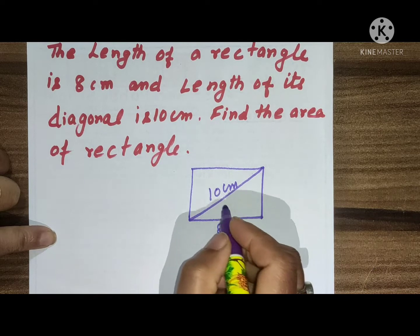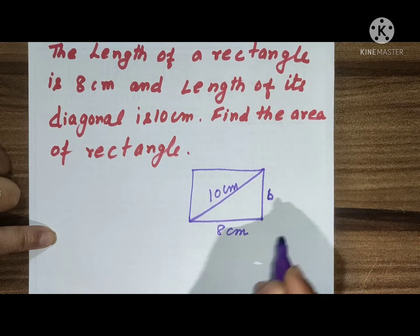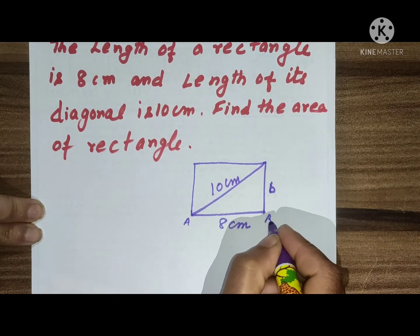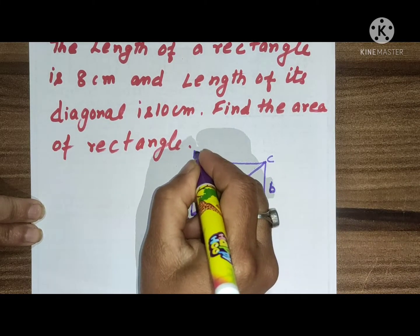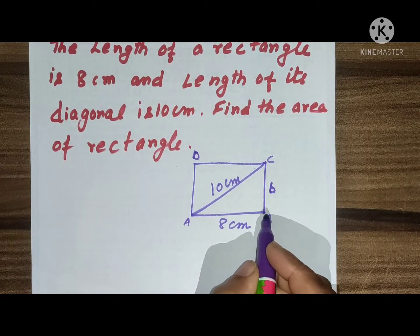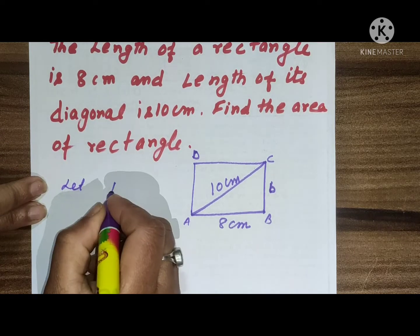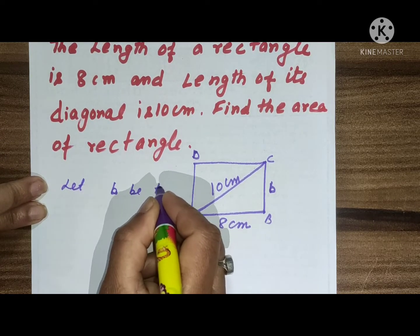so through this diagonal we will find out the breadth. Rectangle ABCD, the breadth is b, so let b be the breadth.